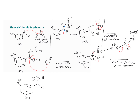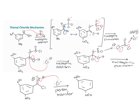In the next step, there's a proton transfer with that same chlorine minus. It comes in and steals the proton, and those electrons go onto the oxygen. That forms our acyl chloride, and we also form HCl as a gas that bubbles off. That's how we form both SO2 and HCl as gaseous byproducts.